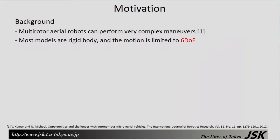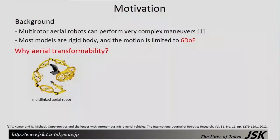So recently, the multi-rotor air robot has been developed rapidly to perform autonomous tasks with very complex maneuvers, but on the other hand, most air robots are rigid. That means the flight motion is limited to six degrees of freedom. But why cannot the air robot have a morphing structure like this, and what is the advantage of such a special structure?